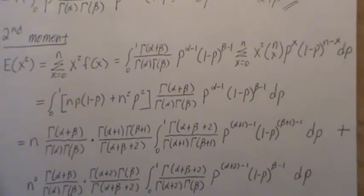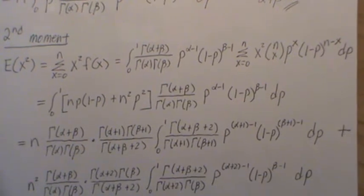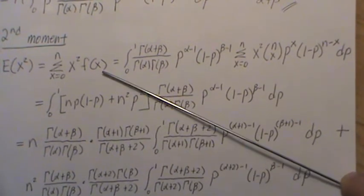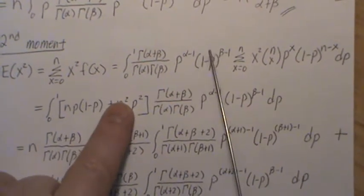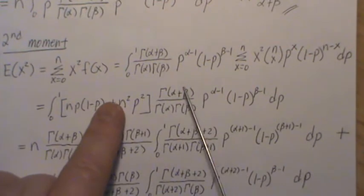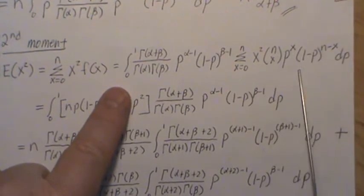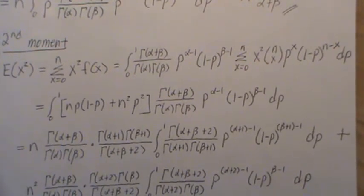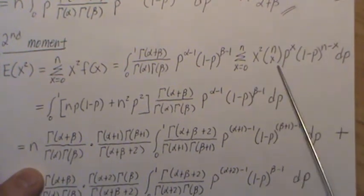Now let's look at the second moment — we'll then use the second moment and the mean to calculate the variance. The second moment is the sum of X squared times the probability of observing that X. Plugging in f of X and taking the sum inside the integral, we have the sum of X squared times the binomial distribution, which is the second moment of a binomial distribution. I have a video on the mean and variance of a binomial distribution if you want the details. The second moment of the binomial is the following expression.